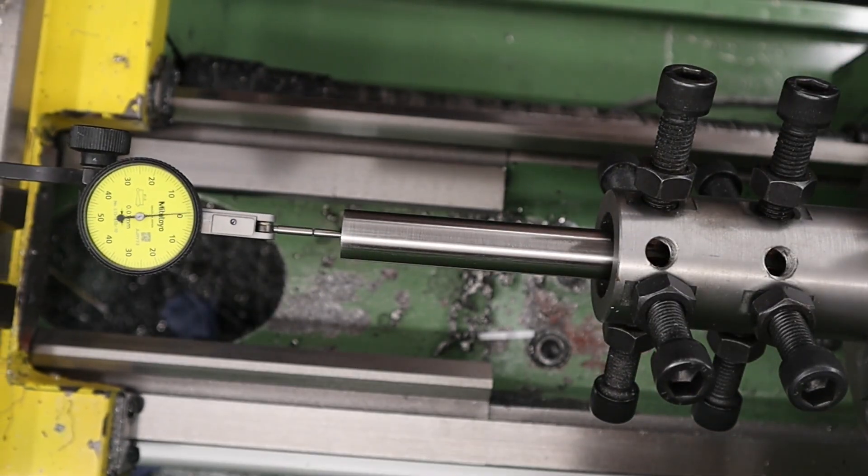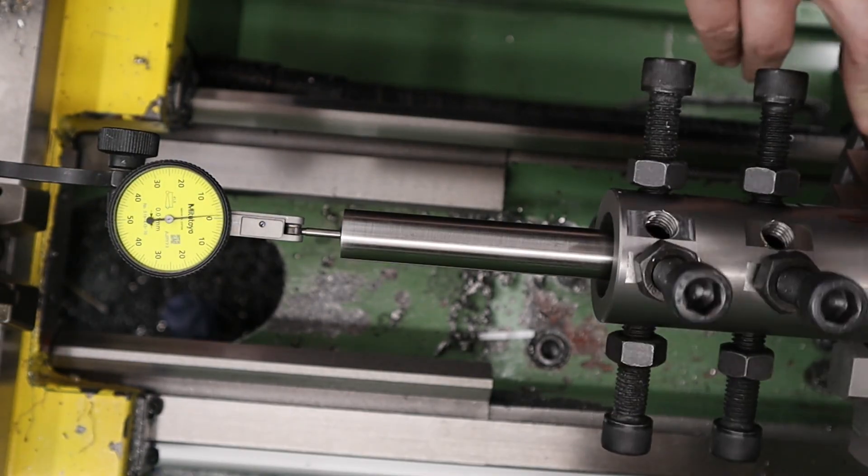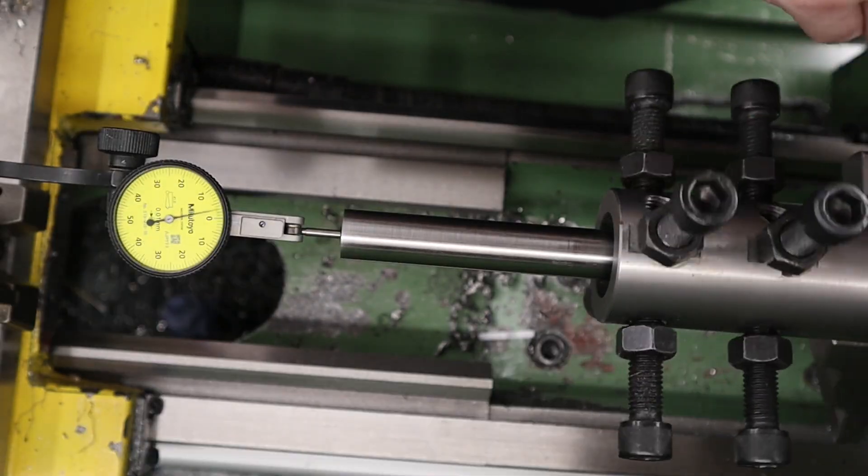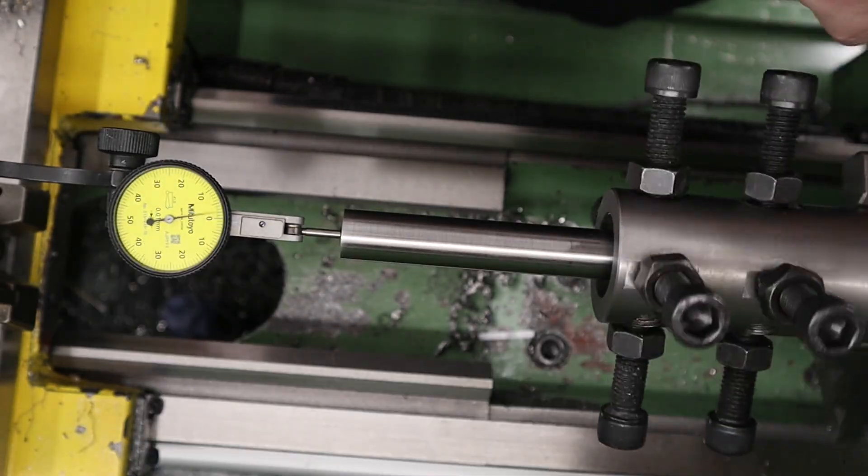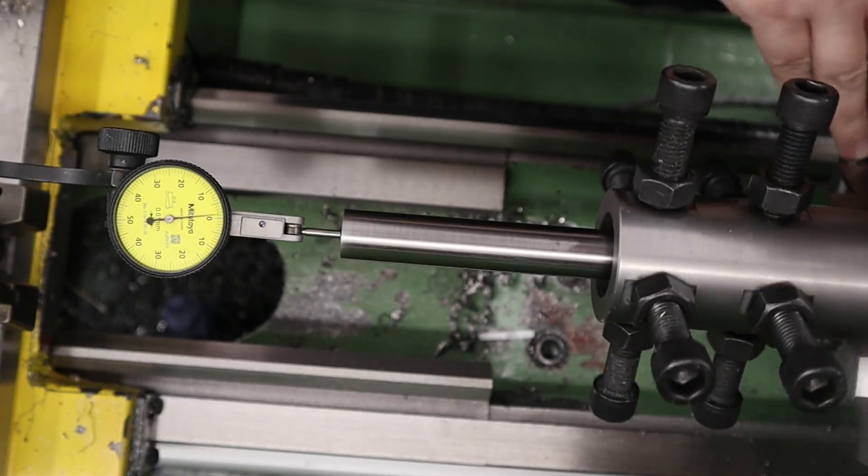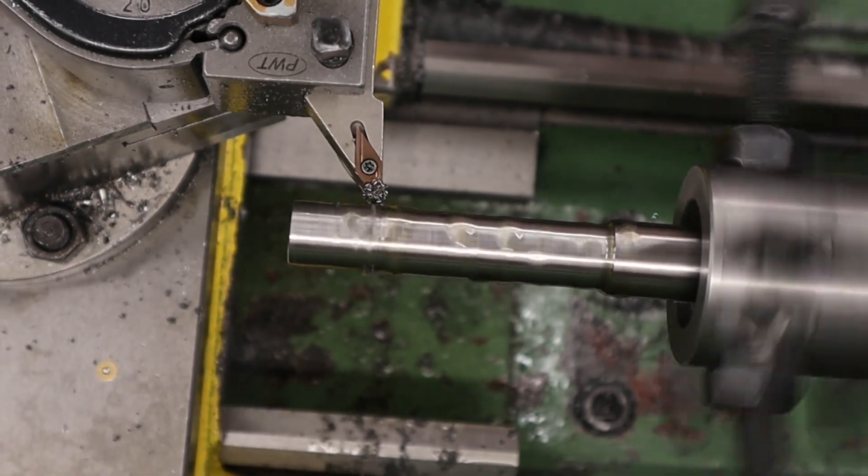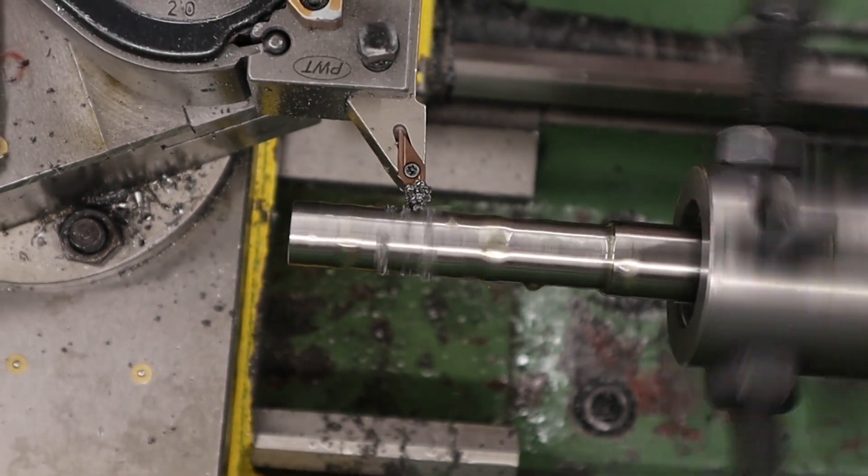With that done we can get started on the barrel itself. The first thing to do is set it up nice and concentrically. We're doing that by the use of a spider, which allows us to adjust the bore concentricity over two points. We're doing this because the outside of the barrel isn't perfectly concentric with the bore, so we need to adjust the position of the bore independently of the OD.